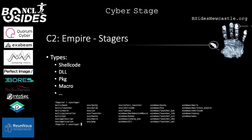Empire works with stagers. There are different kinds of stagers — for example shellcode, DLL files, PKG files (which are package files for macOS), or macros that you can include in Office documents. Empire supports a simple bash stager, Python installer, and many others. As you can see, it supports Linux, macOS, and Windows.